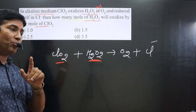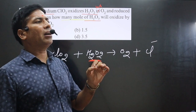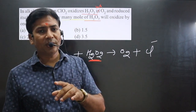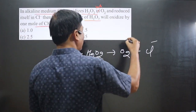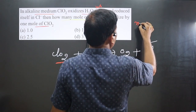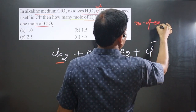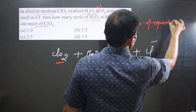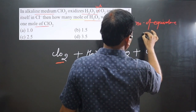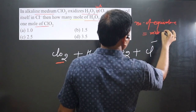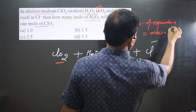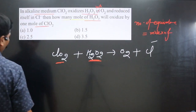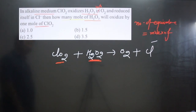Since the question is talking about moles, we can write the formula: number of equivalents = moles × n-factor. This is a very interesting concept. We can easily calculate the n-factor value for each substance, then apply the formula.